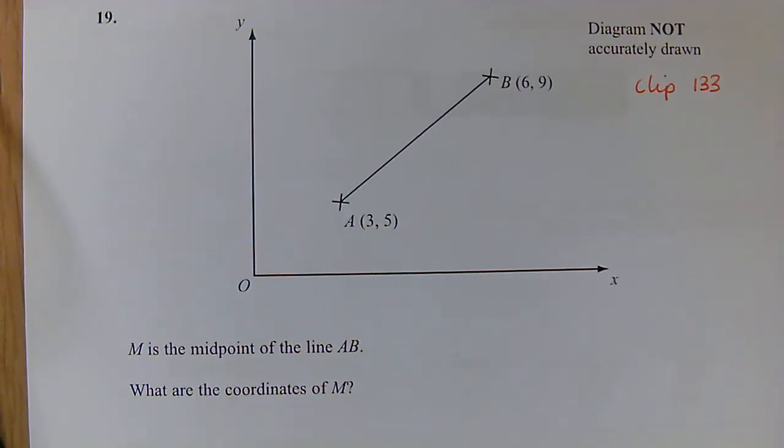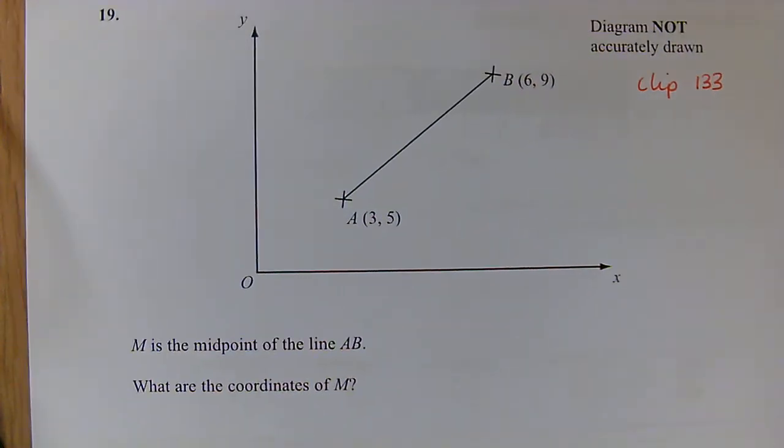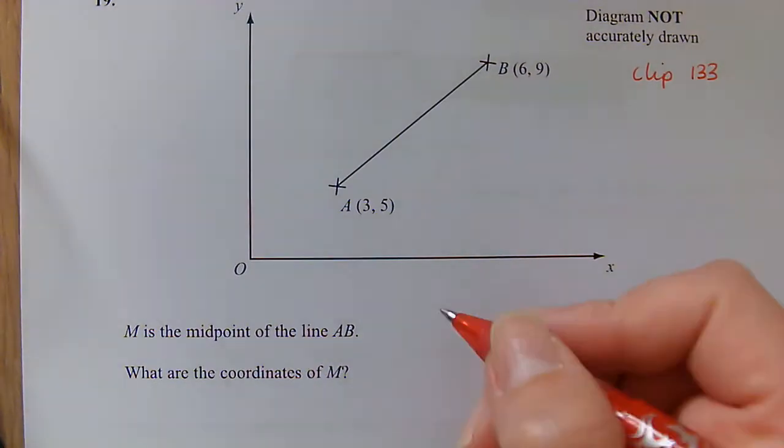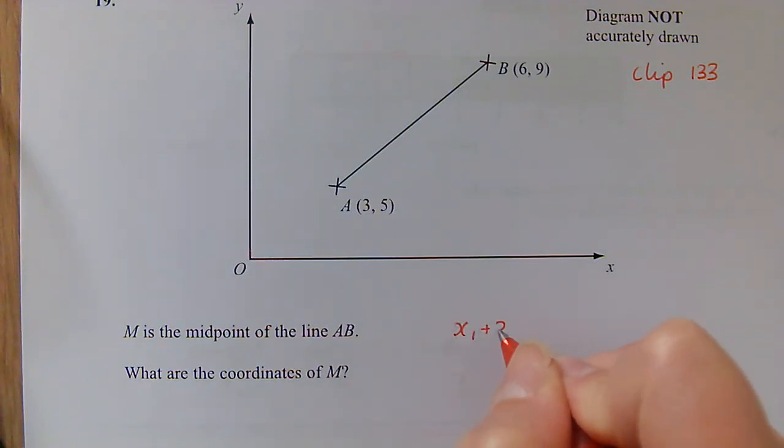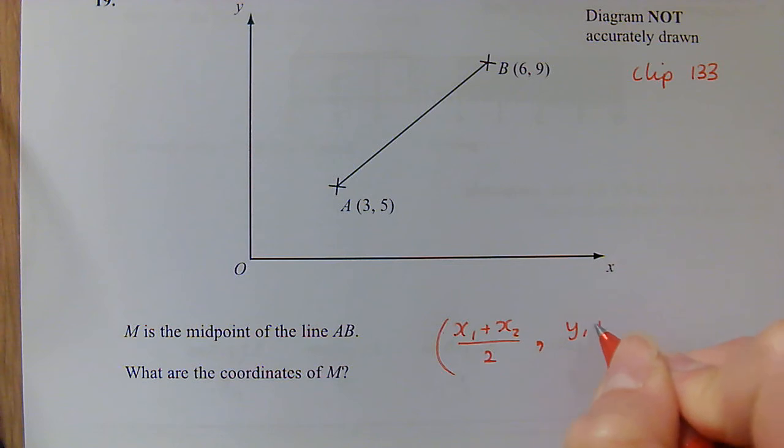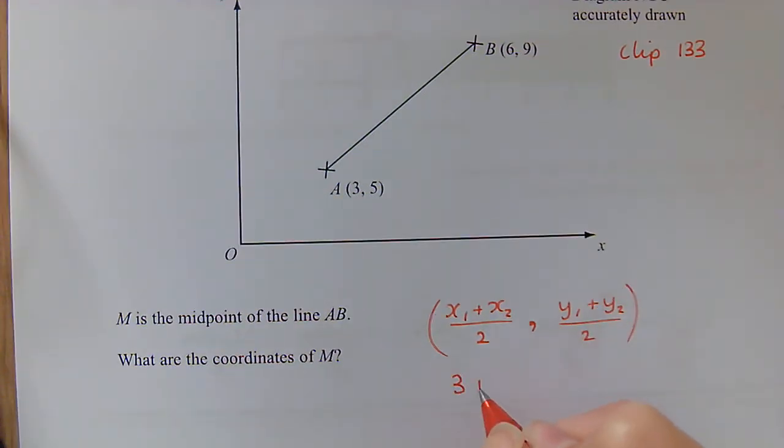Question 19: Midpoint of a line. We've got our two coordinates. So for this one, we're adding our two x coordinates and dividing by 2, and then adding the two y coordinates and dividing by 2. So we've got our 3 plus 6 over 2 and our 5 plus 9 over 2.